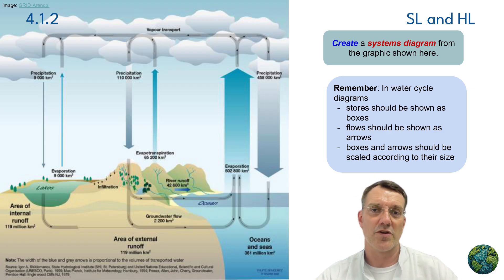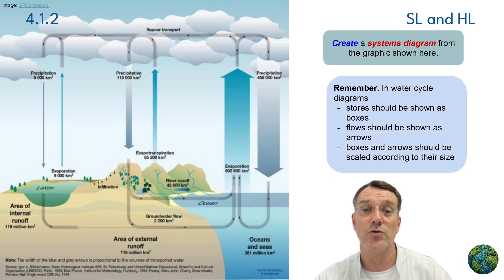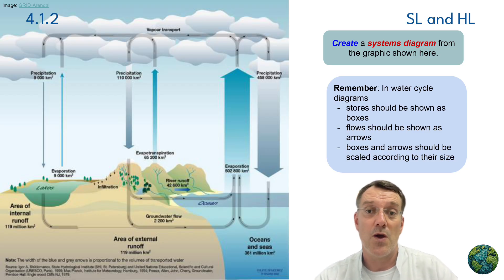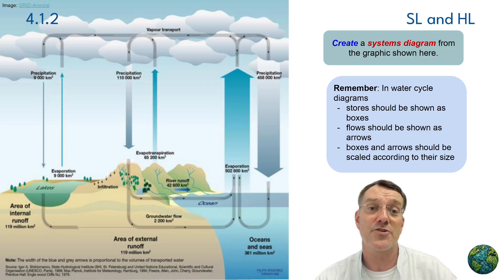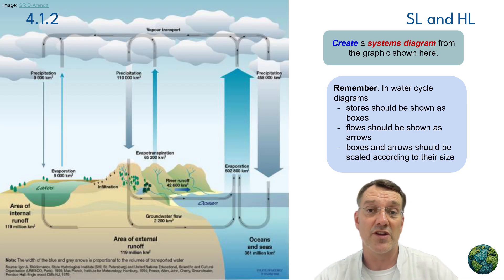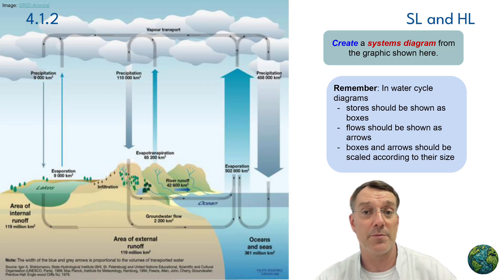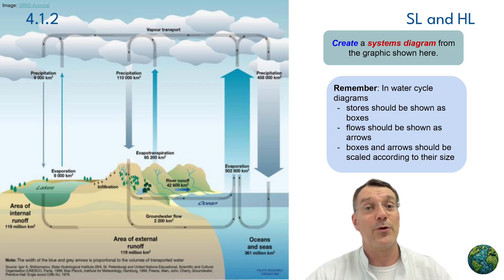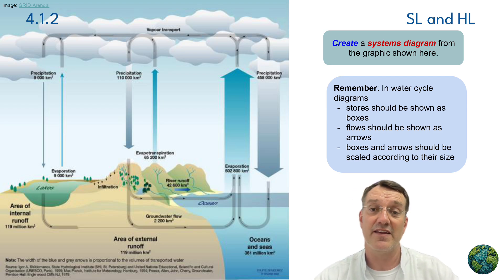When you create a systems diagram for the water cycle, you have to remember to represent stores as boxes and flows as arrows. The size of each part should reflect its relative importance in the system. For example, the ocean storage would be represented by a much bigger box than the atmospheric storage because the oceans contain vastly more water than the atmosphere does. This systems approach helps visualize and understand the connections between different parts of the water cycle and how changes in one part can affect the entire system.